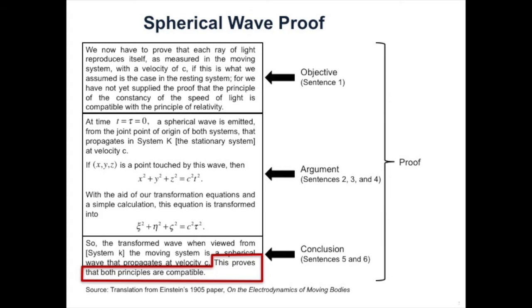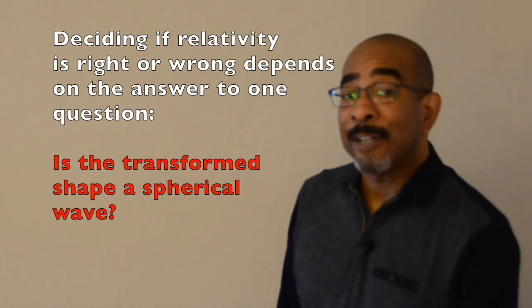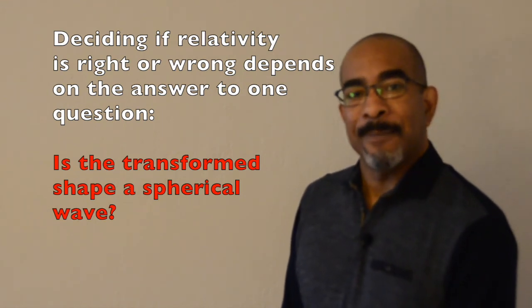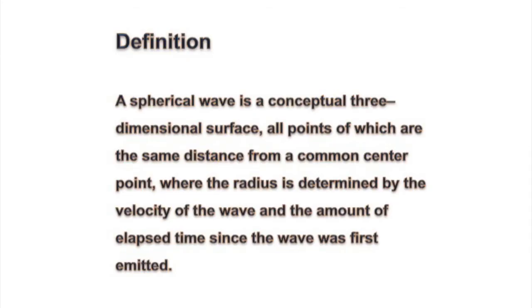In order to understand if Einstein can make the statement in sentence six, we actually have to go back to sentence five. Sentence five says that Einstein looks at this second equation and he believes that that is a spherical wave. Now we have to ask ourselves, is that true? In order to do that, we have to begin by asking ourselves what's the definition of a spherical wave. Well, a spherical wave is actually the surface of all points that are the same distance from a common center point. Now that makes it pretty straightforward for us to evaluate whether or not Einstein's second statement is that of a spherical wave.